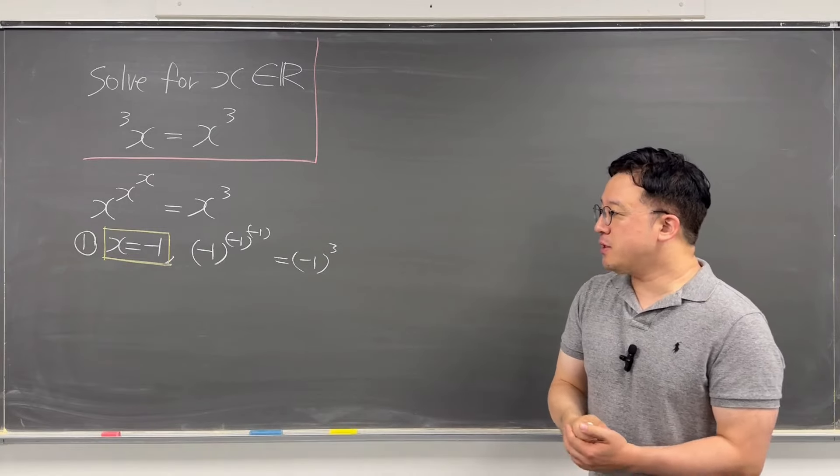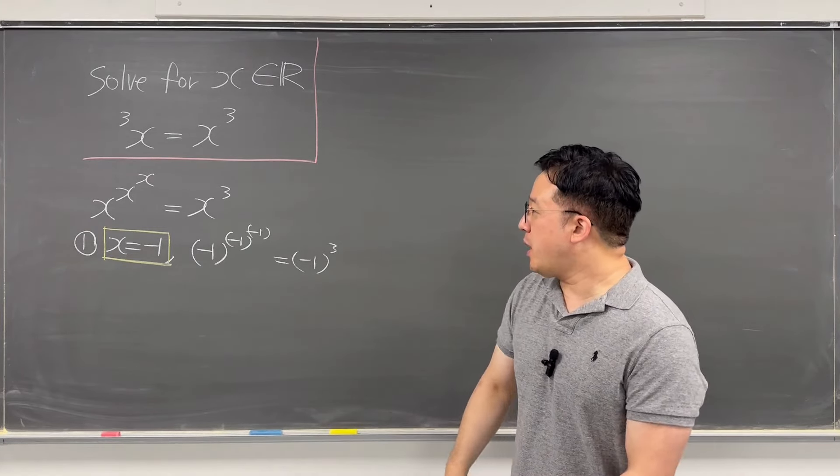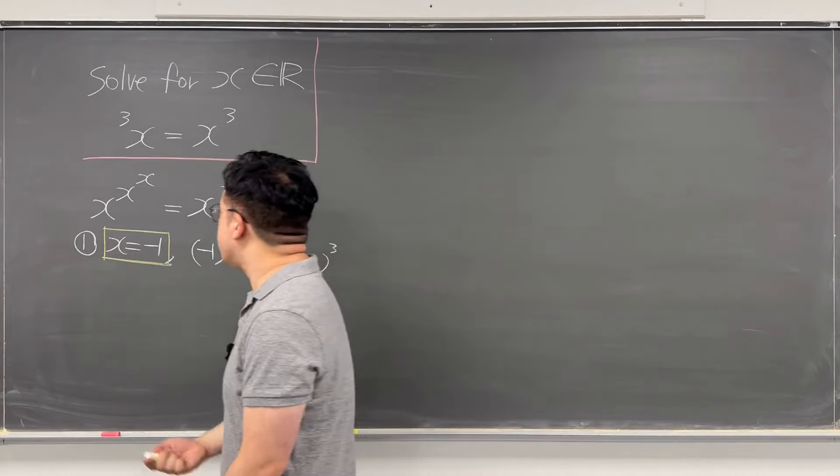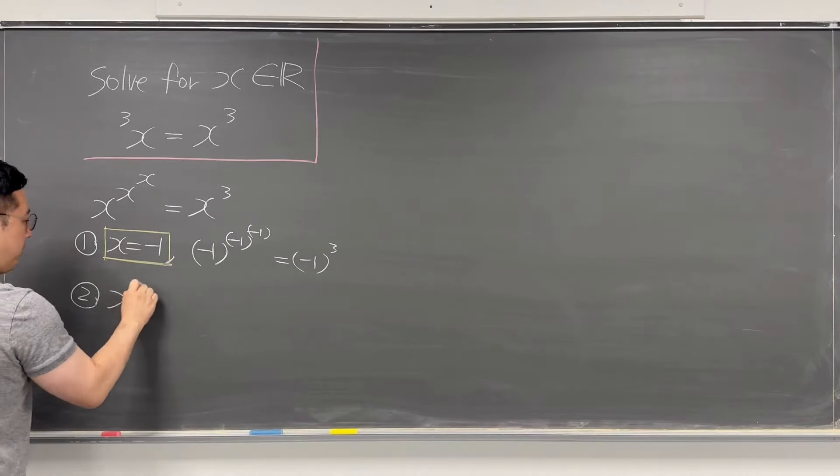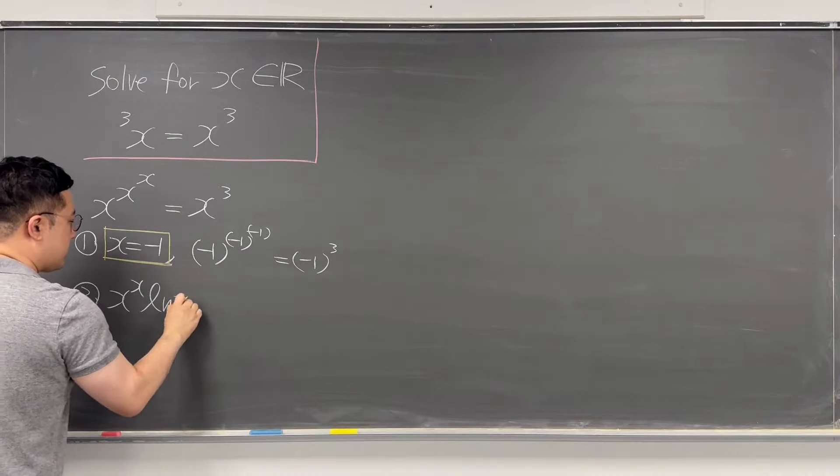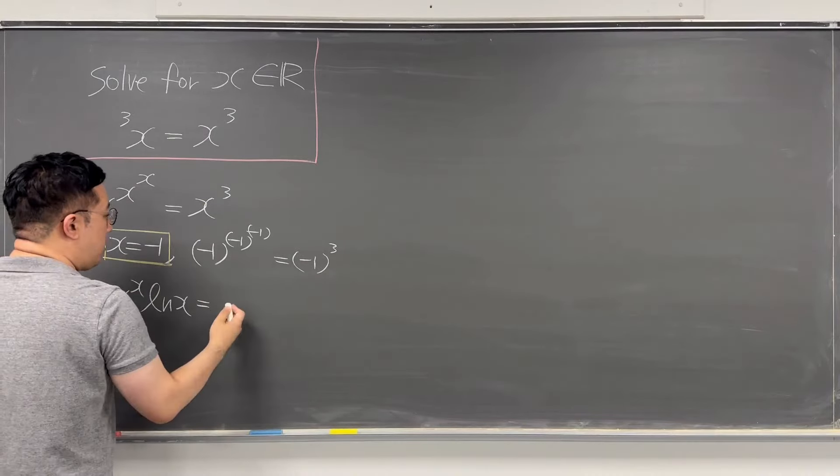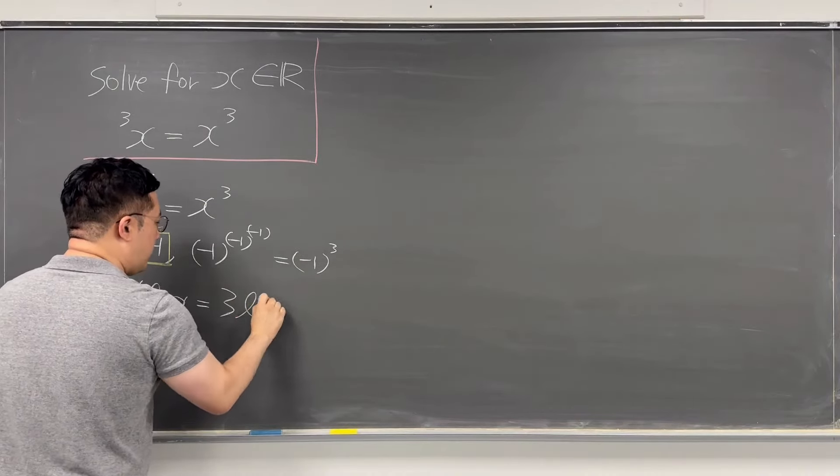Now we can possibly talk about two more solutions, right? So let me apply this natural log on the left-hand side. Then the left-hand side has to be x to the power of x times ln x. This is equal to 3 times ln x.